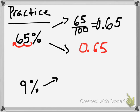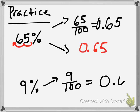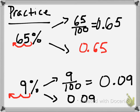Down below: nine percent. First, as a fraction out of one hundred — nine out of one hundred — and that is going to be equal to nine hundredths. So make sure you are writing it as nine hundredths and not nine tenths. And secondly, using the decimal point method, make sure you're moving two spots. Once I move two spots, that is going to be nine hundredths (0.09).